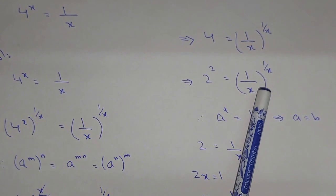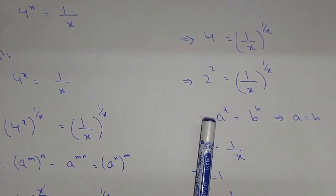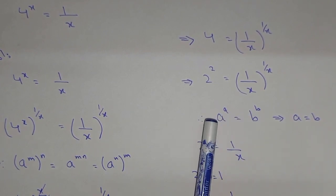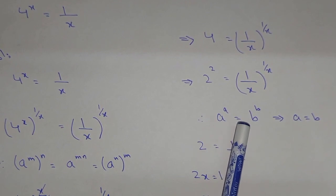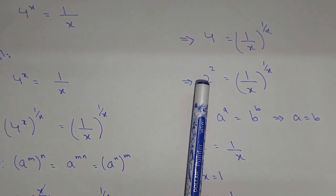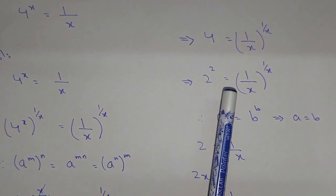Now again, we have the property: whenever we have base and exponent same on both sides, like a^a = b^b, it means a = b. So the same property we are applying. 2^2 = (1/x)^(1/x), so it can be written as 2 = 1/x.